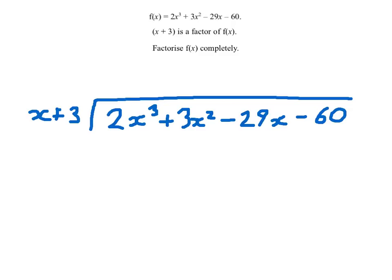The first thing I ask myself is, what do I need to times x by to make 2x cubed? It would be 2x squared. Now I multiply 2x squared by x, which gives me 2x cubed. That's the whole point. And I also multiply 2x squared by 3, and that would give me plus 6x squared.